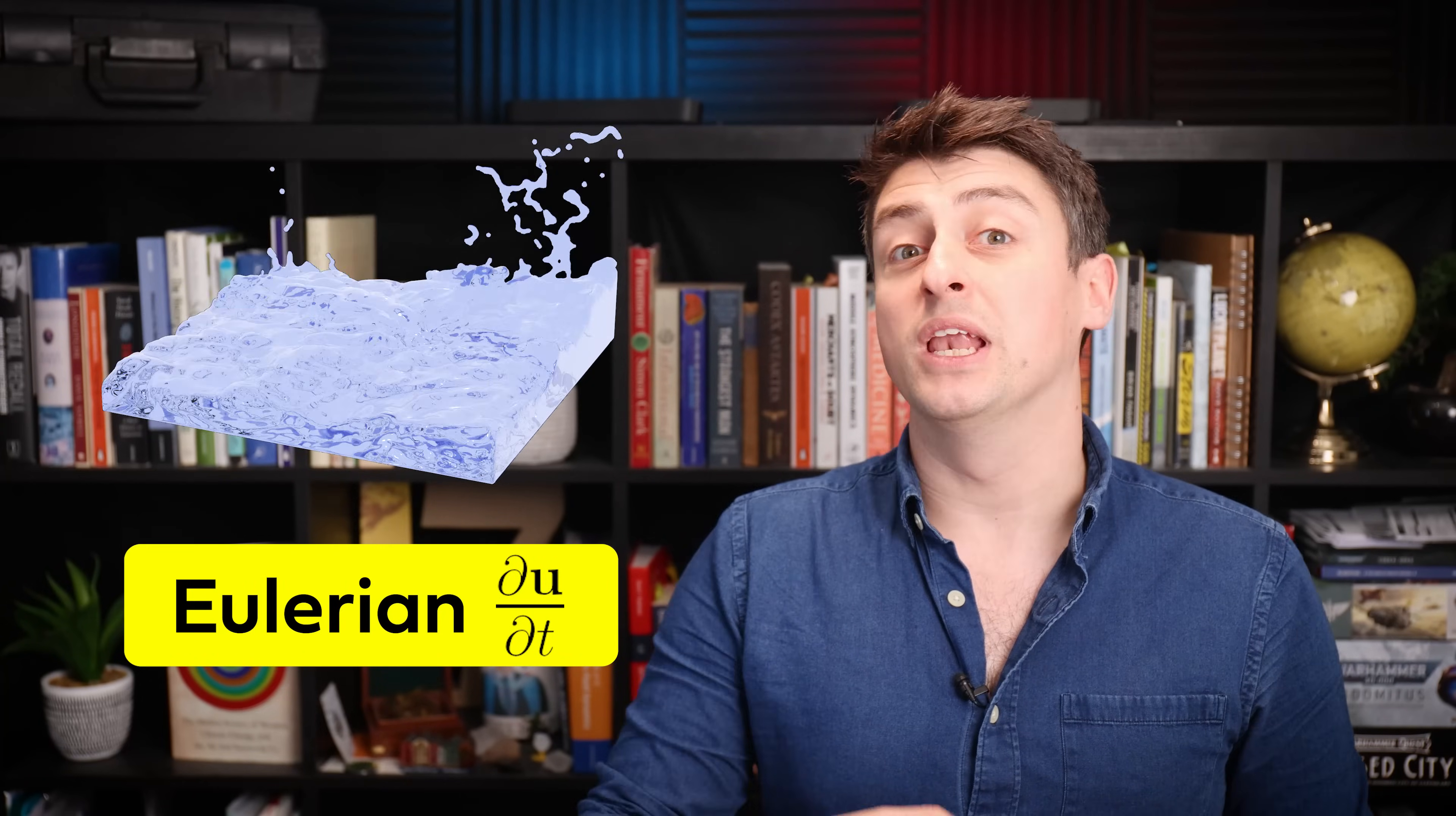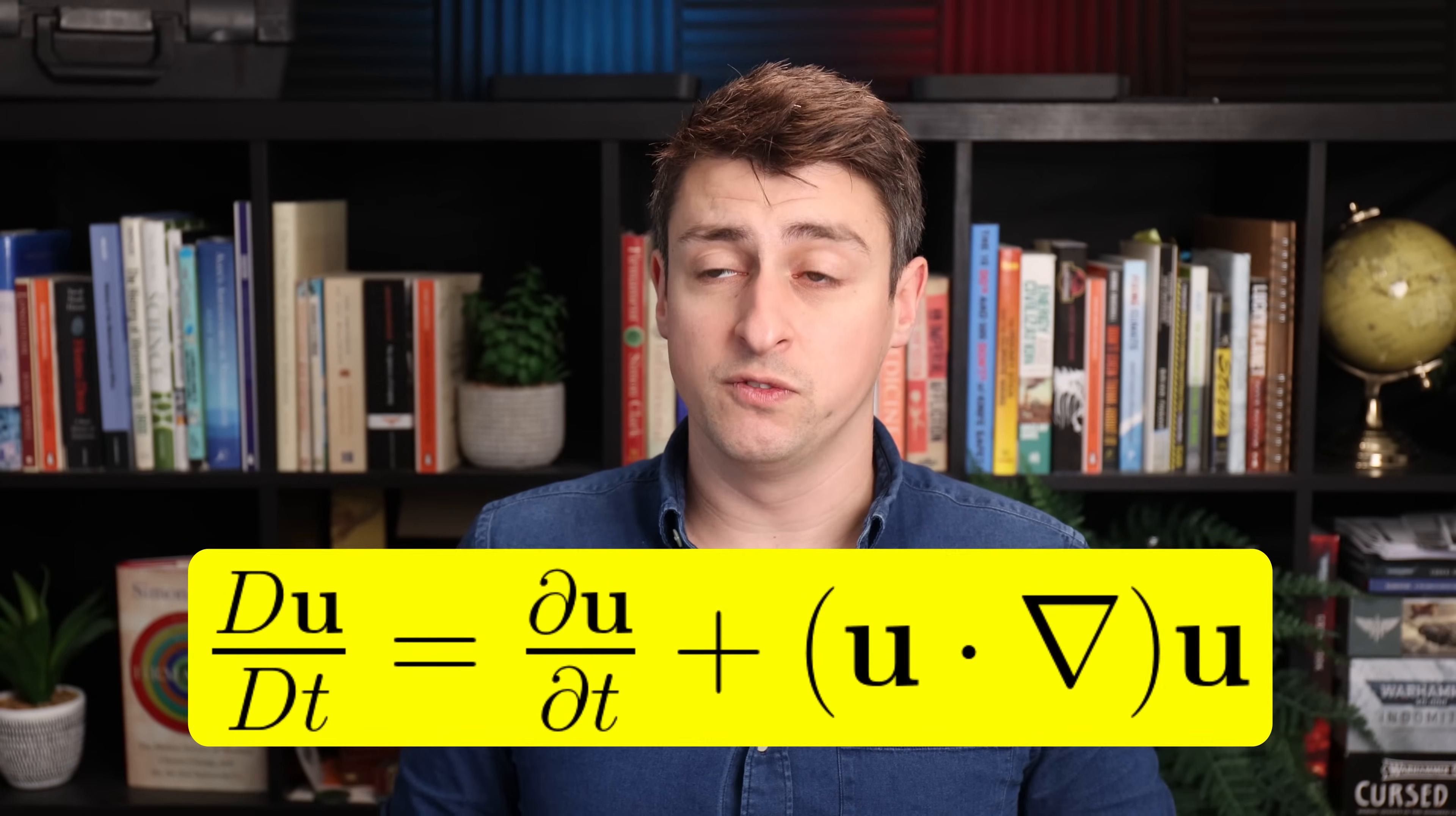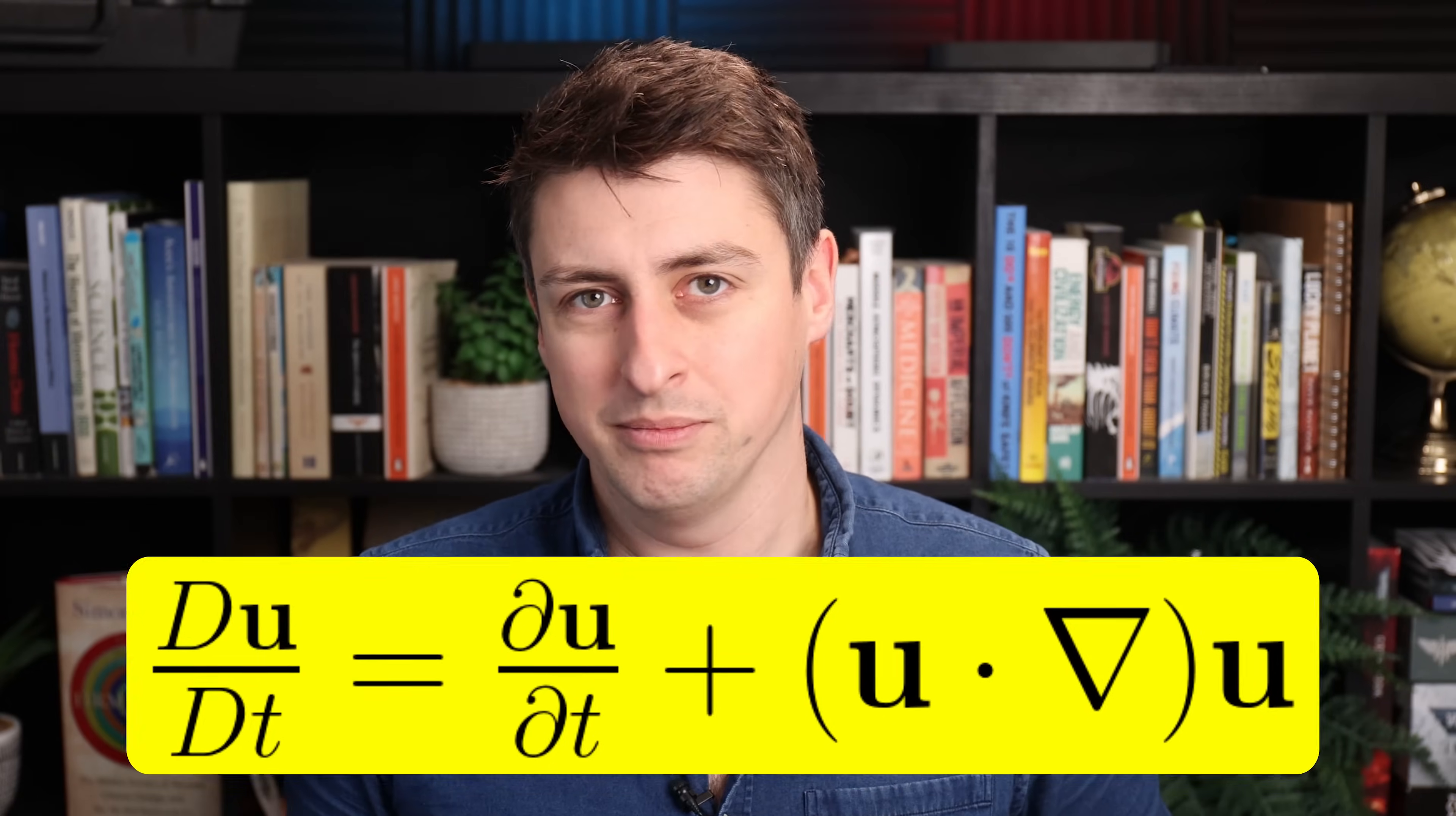We refer to this rate of change as something in or of a fluid element as the material or Lagrangian derivative. And sometimes we are interested in that derivative, but more often than not, we're interested in what's going on in a fixed coordinate system, like what's happening relative to a box that the fluid is in, what we call the Eulerian derivative. Fortunately, these two derivatives can be related really quite easily.